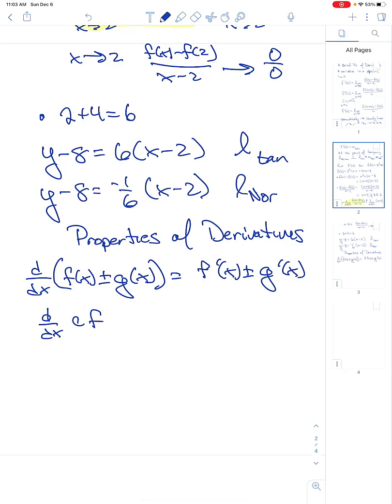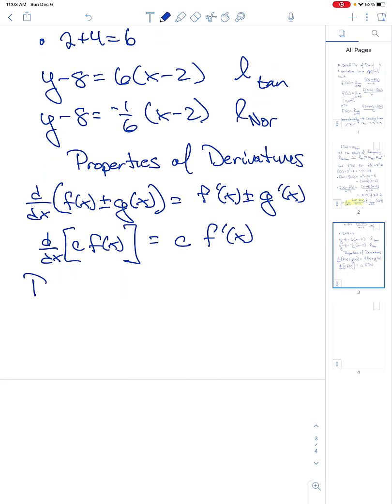The derivative of the product of a number, a scalar and a function, is the scalar times the derivative of the function. And then we had our first rule that we went over, which is the power rule, which says the derivative with respect to x of x to a power is the power times x to one less degree.